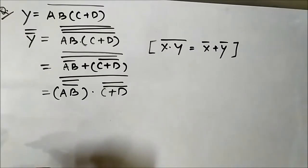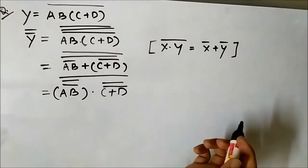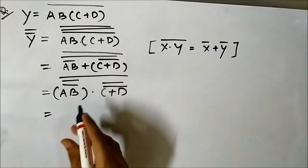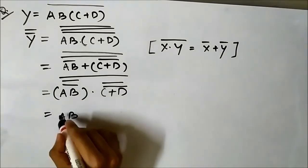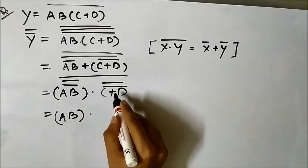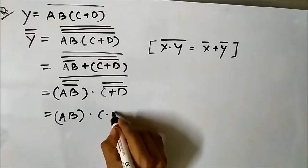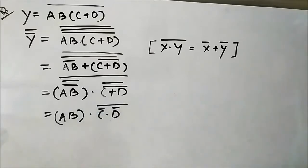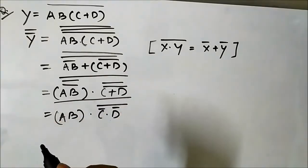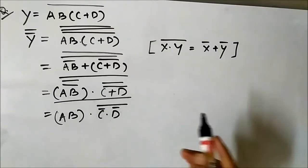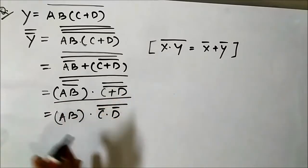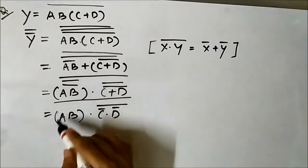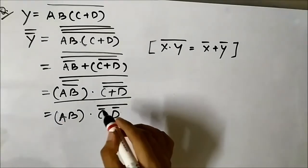We know that the double complement of something gets removed and we get AB. And here C plus D complement — we can write it as C complement · D complement whole complement — and then we have another whole complement. Now all of the variables present here have been transformed into product form and AND form. All of these variables are in AND form, so we can easily implement it using NAND gates.